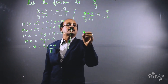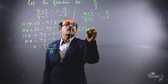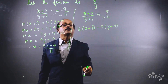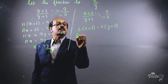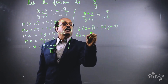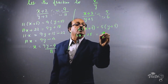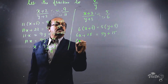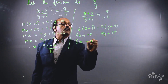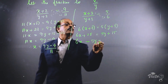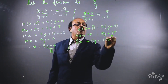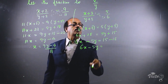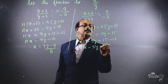Cross multiplying the second equation: 6 into (x + 3) = 5 into (y + 3), giving 6x + 18 = 5y + 15. Rearranging: 6x − 5y = 15 − 18, which equals −3.